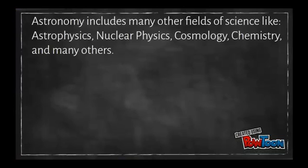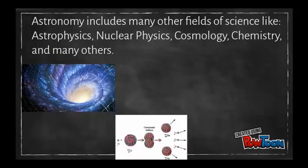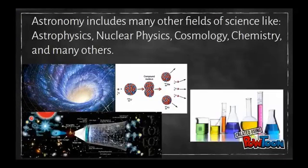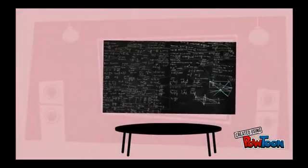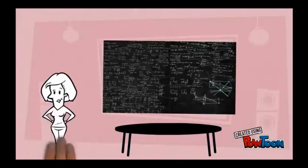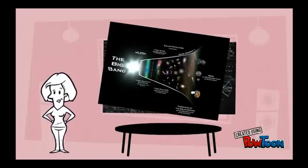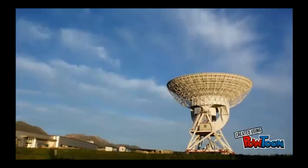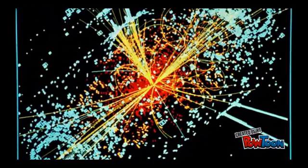Astronomy includes many other fields of science, like astrophysics, nuclear physics, cosmology, chemistry and many others. In addition, astronomy can use a lot of complex math to describe the universe. For example, the description of the Big Bang theory is in a mathematical language of physics. We know that the Big Bang happened because it is supported by many experiments like astronomical observations and particle colliders.